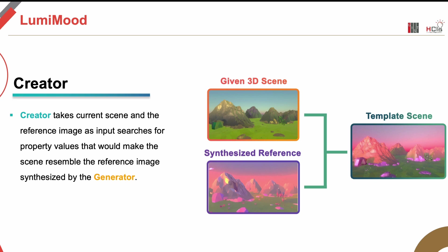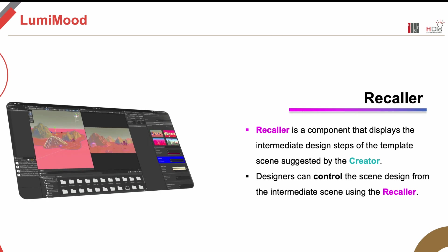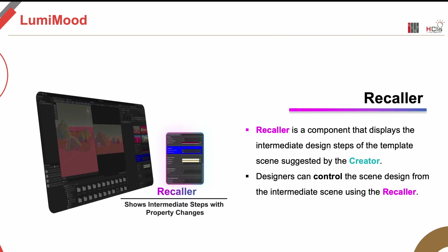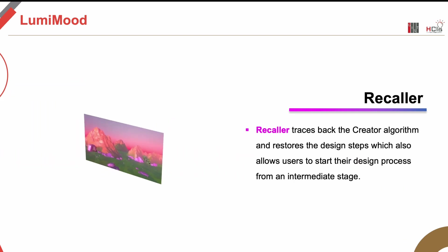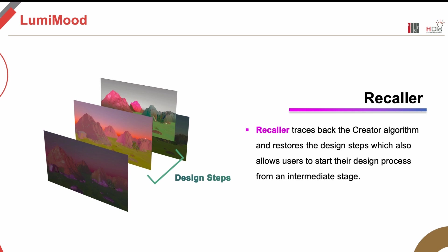The last component of LumiMood is the recaller, which displays the intermediate design steps between the initial scene and the designed template scene suggested by the creator. While displaying how the scene has changed, the recaller also allows designers to create their designs from the intermediate scene, ensuring controllability of the design workflow. When the creator designs the template scene, the recaller stores the changes in lighting and post-processing properties and then restores intermediate designs.